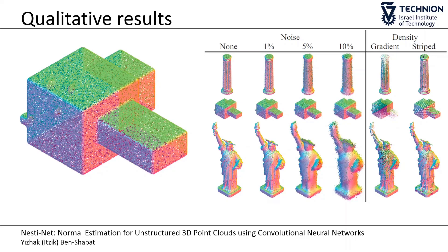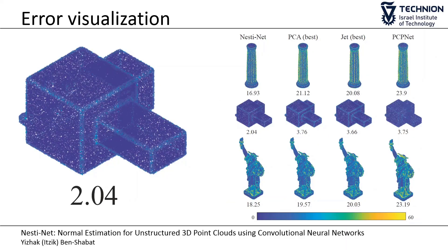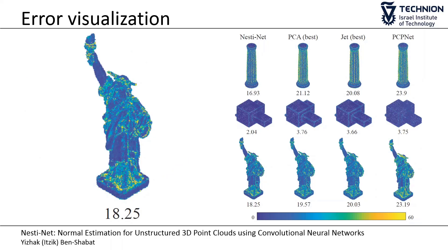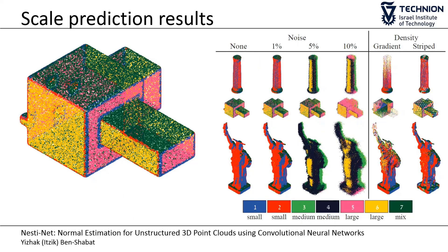Qualitatively, we can see that as the level of noise increases, the normal general direction is maintained but fine details are lost. Additionally, we use a heat map to show the angular error between estimated and ground truth normals for different normal estimation methods. It can be seen that higher error values occur near corners and regions with high curvature. We draw some insight into the network resource distribution by assigning a color to each expert and visualizing the point cloud with the color of the expert used for estimating the normal. It shows the expert's specialization in different regions — for example, experts 1 and 2 specialize in points in regions with high curvature.